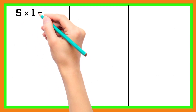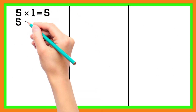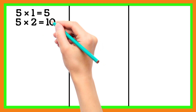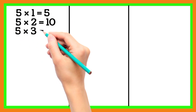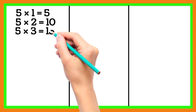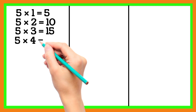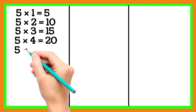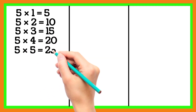5 1 is 5, 5 2 is 10, 5 3 is 15, 5 4 is 20, 5 5 is 25.